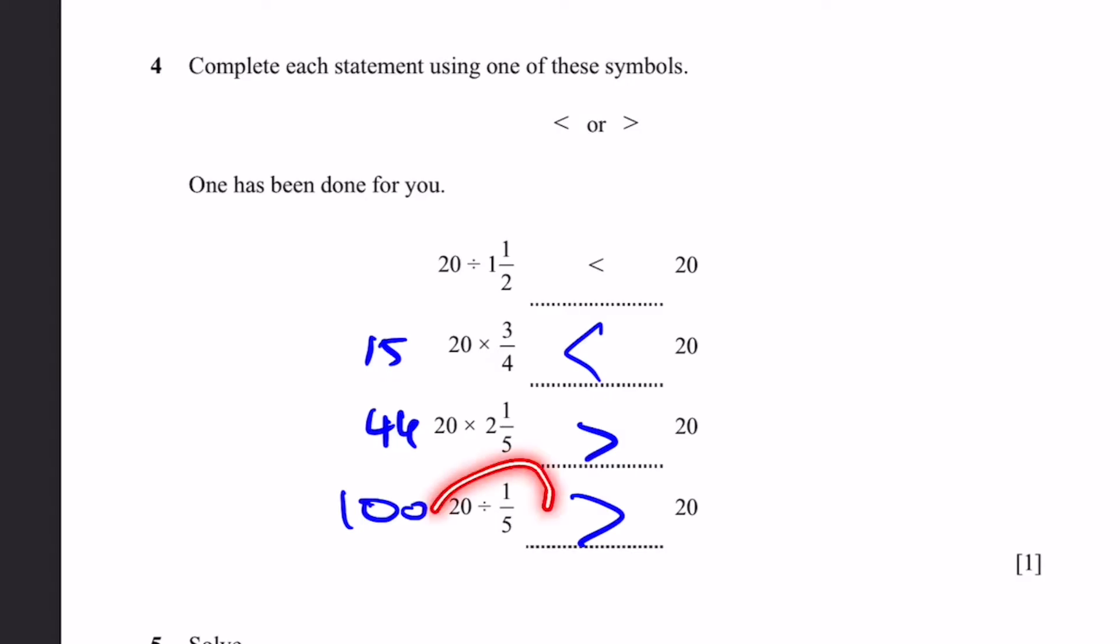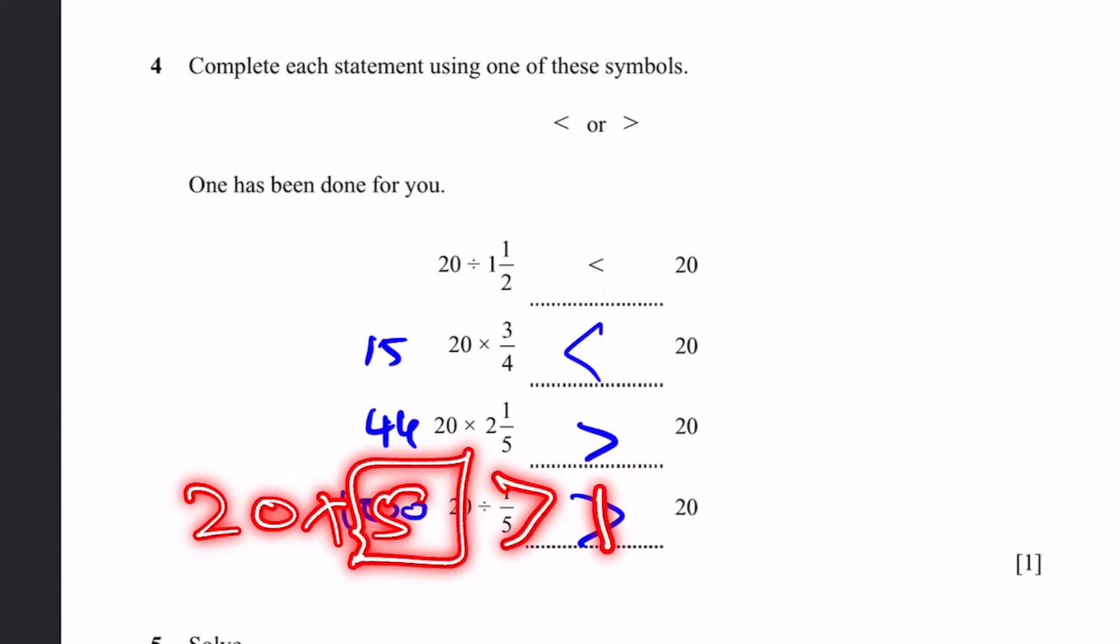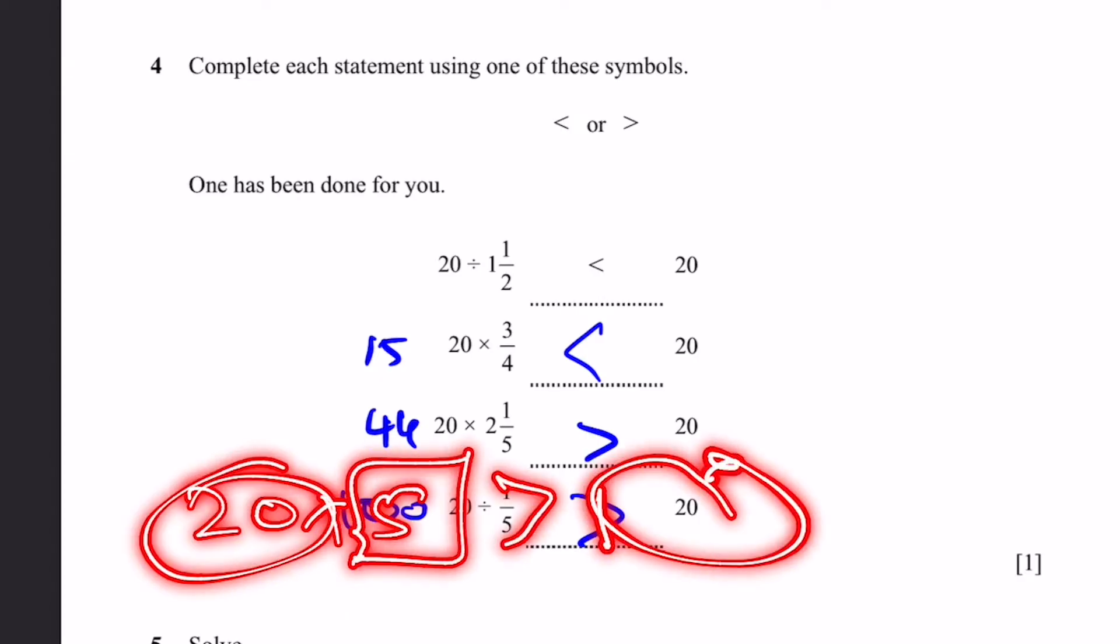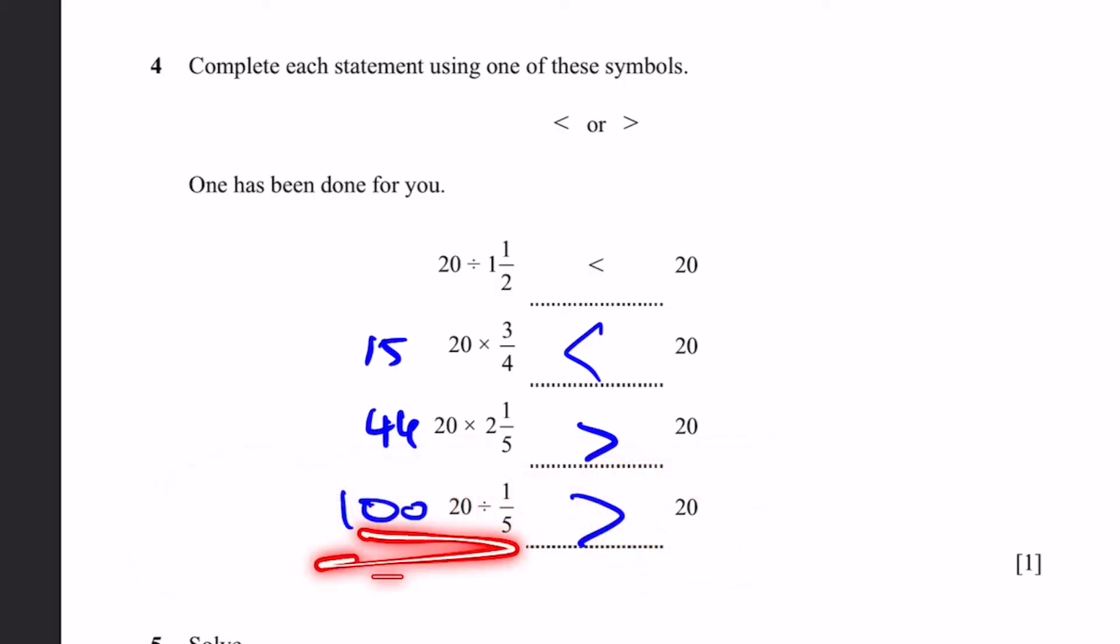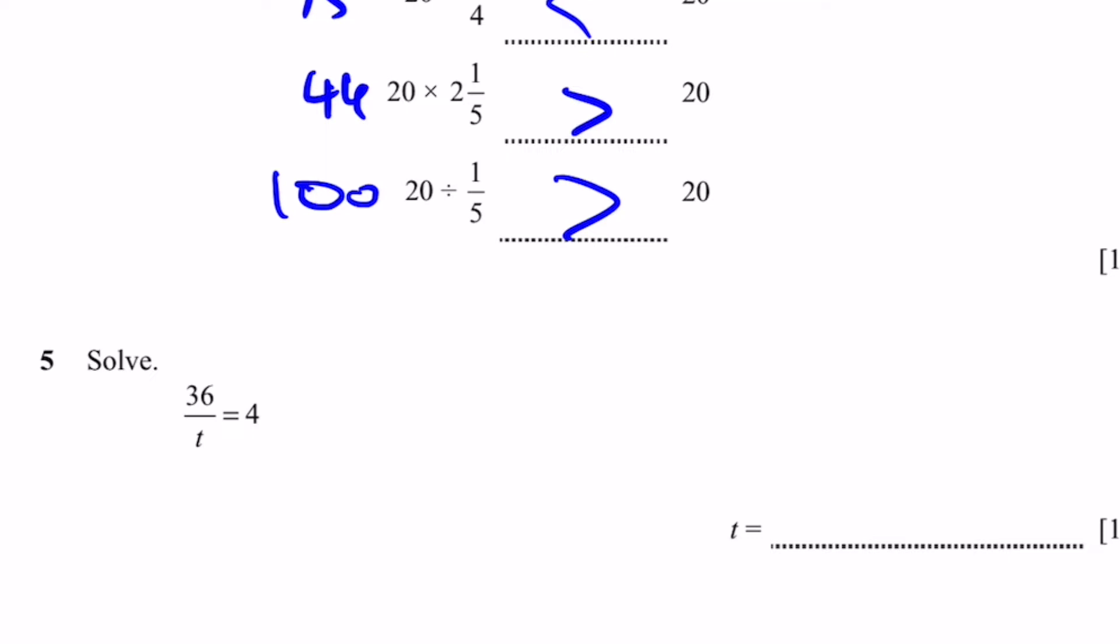Even without calculating, we can see that 20 divided by 1 by 5, that's 20 times 5. This 5 is greater than 1. So multiplying 20 to both sides, we will obviously get this side larger. Question 5. 36 by t equals 4. Solve it. So 36 is equal to 4t when we bring t to the other side. And t is equal to 36 by 4, which is 9. That's the answer.